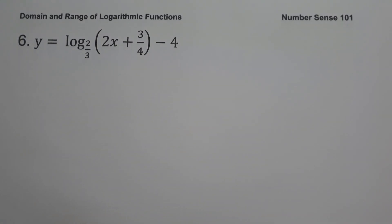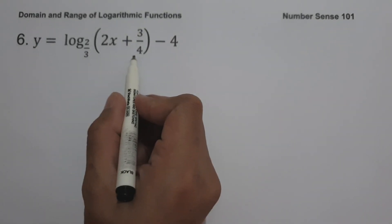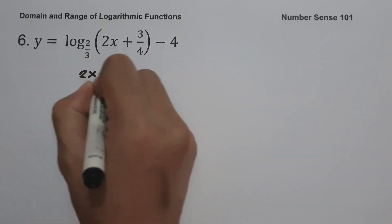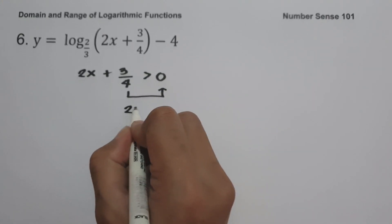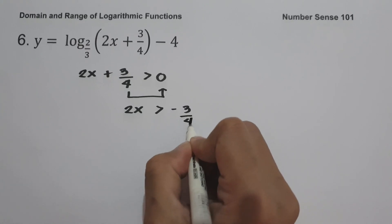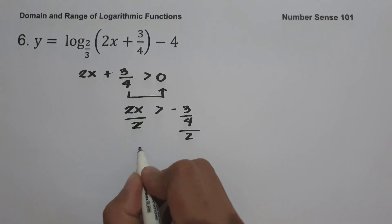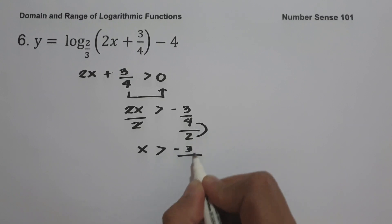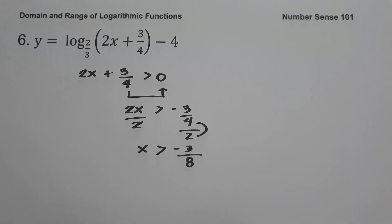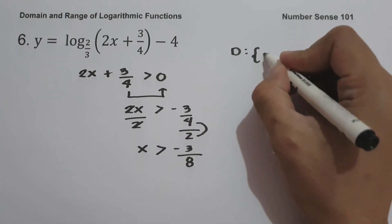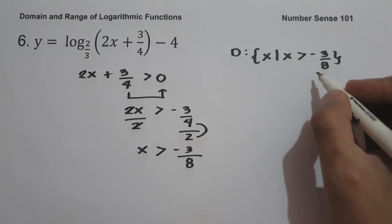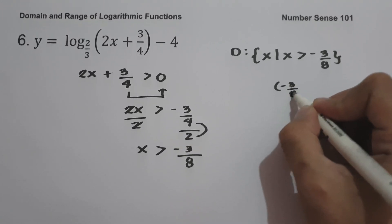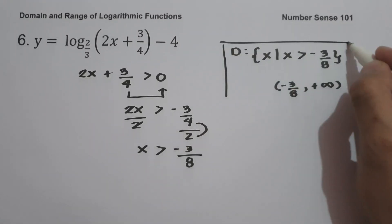Example number six: y equals log base (2/3) of (2x plus 3/4) minus 4. To find the domain, let us equate our argument greater than zero: 2x plus 3/4 greater than zero. Moving 3/4 to the other side gives 2x greater than negative 3/4. Dividing both sides by 2 gives x greater than negative 3/8. In set builder notation: the domain is the set of x values such that x is greater than negative 3/8. In interval notation: from negative 3/8 (not included) up to positive infinity. This will be the domain.